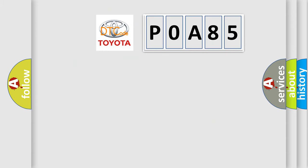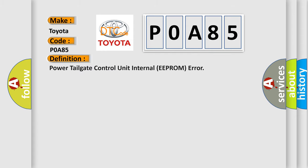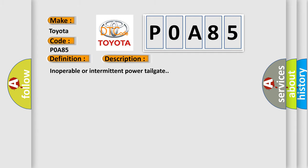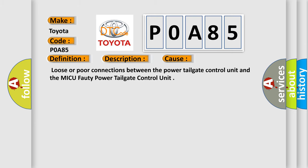So, what does the diagnostic trouble code P0A85 interpret specifically for Toyota car manufacturers? The basic definition is: Power Tailgate Control Unit Internal EEPROM Error. This is a short description of this DTC code: inoperable or intermittent power tailgate. This diagnostic error occurs most often in these cases: loose or poor connections between the power tailgate control unit and the MICU-4T power tailgate control unit.